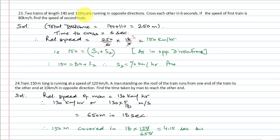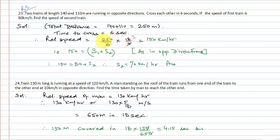Question number 23: Two trains of length 140 and 110 meters are running in opposite directions and cross each other in 6 seconds. If the speed of the first train is 80 km/hr, find the speed of the second train. Total distance = 140 + 110 = 250 meters. Relative speed = 250/6 m/s × 18/5 = 150 km per hour.